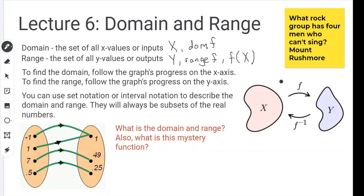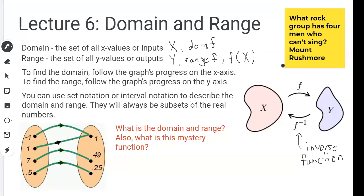I've got a little diagram that shows how domain and range really works. I've got set X over here — that's the domain — and set Y over here — that's the range. F is a function that maps X to Y, so every single X value gets mapped to exactly one Y value. Later on we'll learn about inverse functions, which go the other way: mapping the range back to the domain.